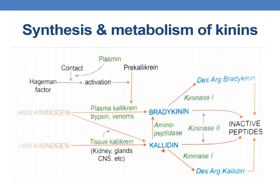Additionally, calidin can be converted to bradykinin. Bradykinin can also be generated from calidin on the removal of a lysine residue by an aminopeptidase. These are the overall synthesis of bradykinin and calidin. The plasma and tissues also contain kininogenase inhibitory factors like C1 esterase inhibitor.